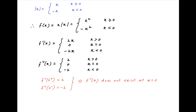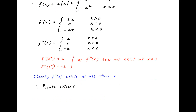Now, f''(x) is equal to the constant 2 for all positive x, and is equal to the constant minus 2 for all negative x. Therefore, f''(x) exists for all other values of x. Therefore, f(x) is twice differentiable for all real numbers except x is equal to 0, which is the required answer.